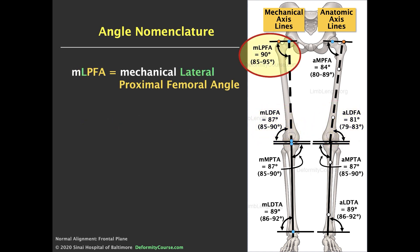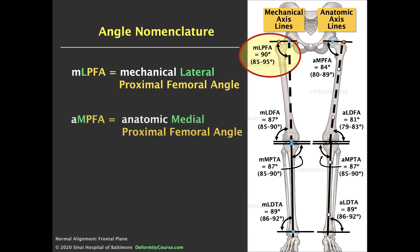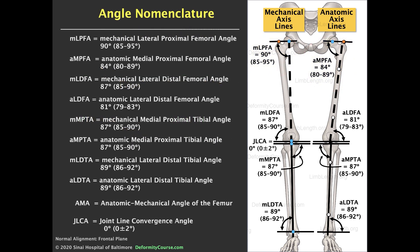The mechanical lateral proximal femoral angle is 90 degrees, with a range of 85 to 95. The anatomic medial proximal femoral angle is 84 degrees, with a range of 80 to 89 degrees. The decision was made that the average angle would always be less than 90, hence the choice of medial versus lateral for these two angles. It may be worthwhile to take a screen capture of this image to keep as a reference for normal angles as we review deformity analysis.